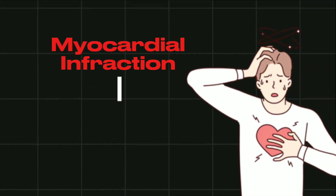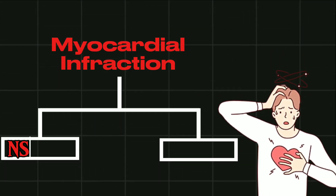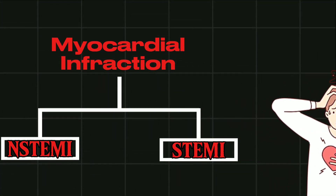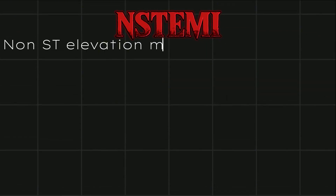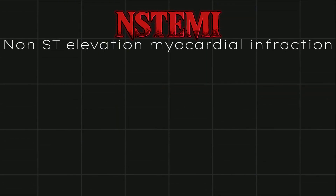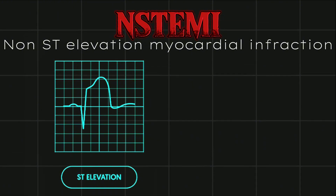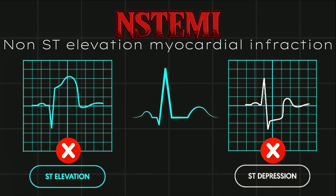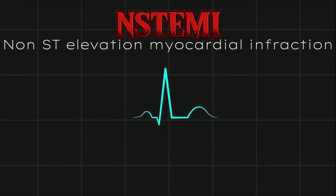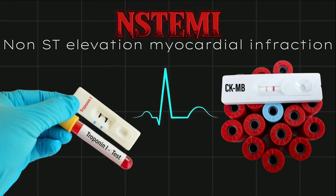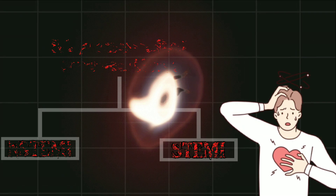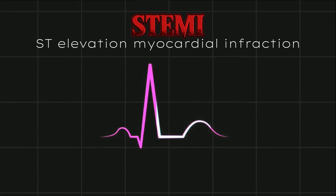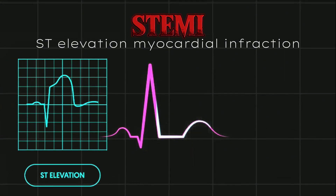Myocardial infarction has mainly two types: non-ST elevation myocardial infarction and ST elevation myocardial infarction. In non-ST elevation myocardial infarction, there is neither ST elevation nor ST depression, which means ECG has no changes, but the patient's blood reports such as troponin or CPKMB are positive. While in ST elevation myocardial infarction, the ST segment of the ECG is significantly elevated or depressed.